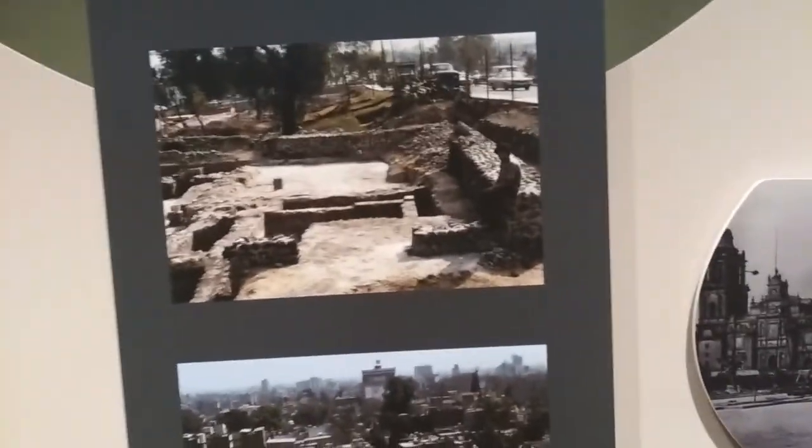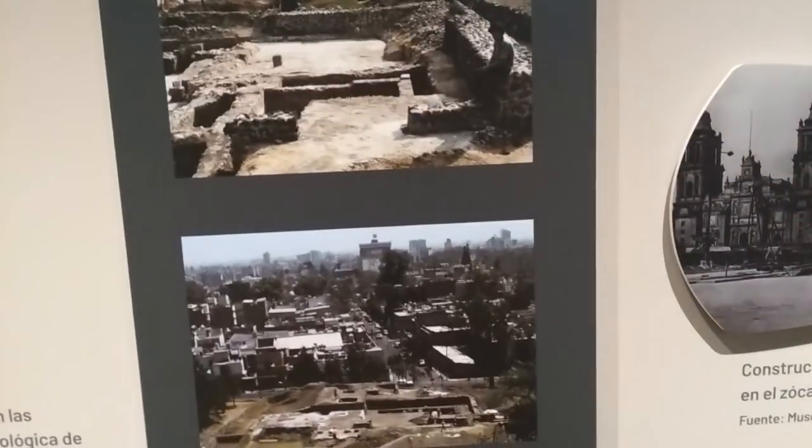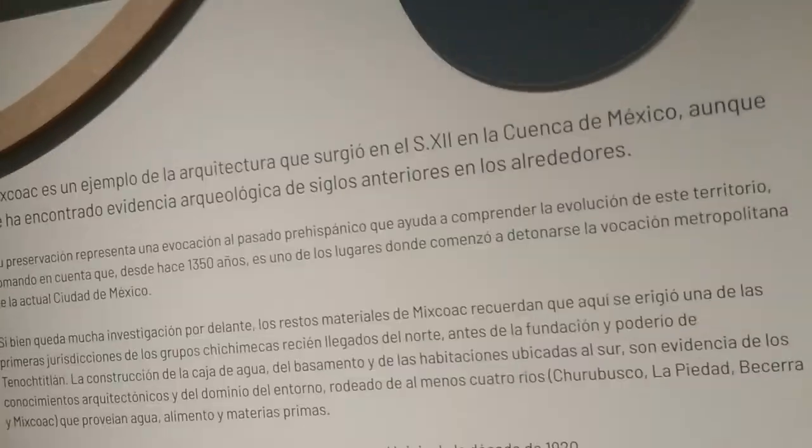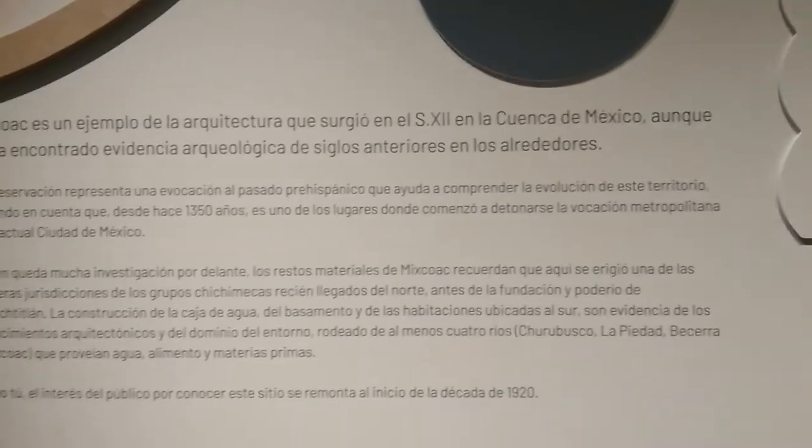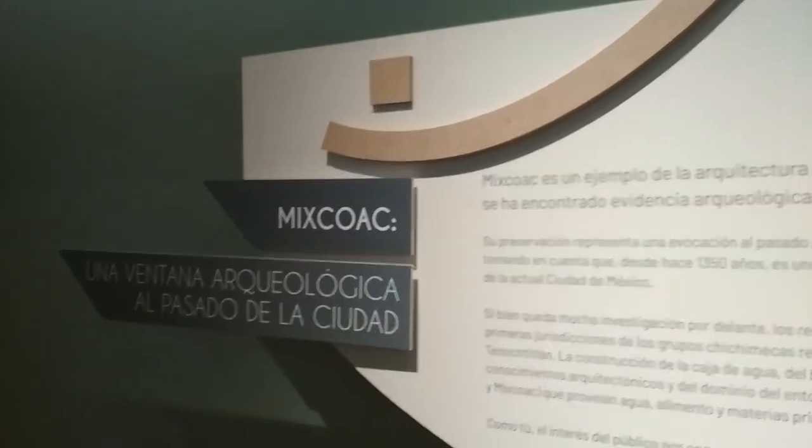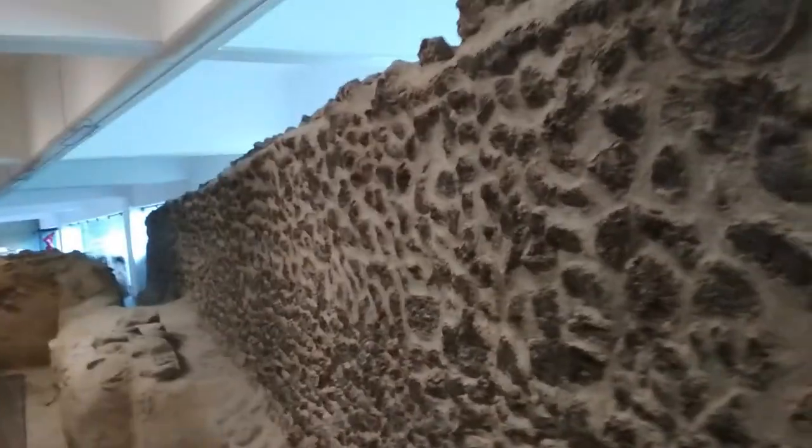Aquí podemos ver excavaciones en la zona arqueológica de Mixcoac en 1979. Como ven, al ladito pasa la avenida. Aquí vemos cómo se veía la zona arqueológica en 1979. Y seguimos viendo cómo está la piedra volcánica.